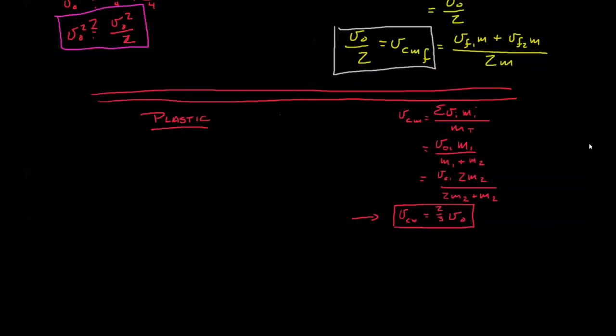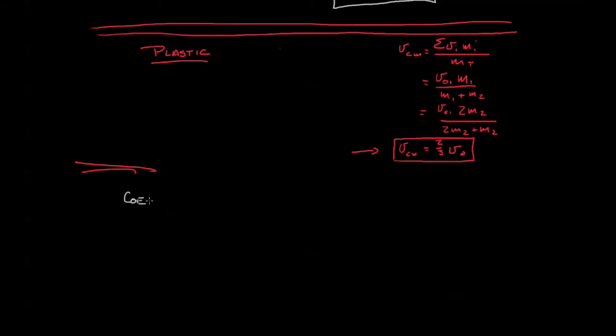Let me start off with a brief definition of the coefficient of restitution. It's simply a ratio. We usually use the letter E and it's the relative velocity between two bodies at the end of a collision divided by the relative velocity of two bodies before the collision. So in our elastic state, if you recall, the relative velocity after the collision was v-naught and the initial relative velocity was also v-naught, so the coefficient of restitution is one.